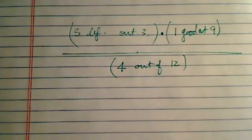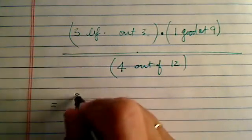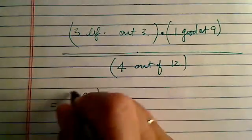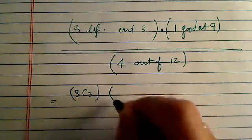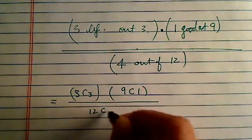So let's put it in a probability form. So 3 out of 3, 3 choosing 3 times 9, 9 choose 1, 12 choose 4.